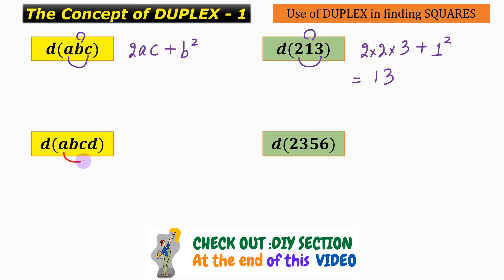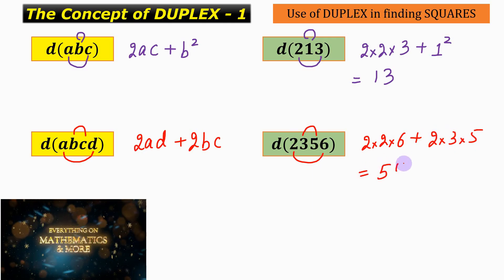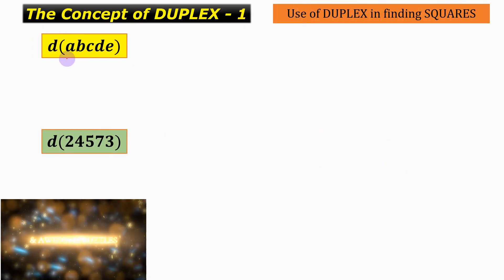For the duplex of a four-digit number abcd, we multiply the two extremes: 2 into a into d, plus the duplex of b and c, that is 2 into b into c. Similarly, the duplex of the number 2 3 5 6 will be defined as 2 into 2 into 6, plus 2 into 3 into 5, and this comes out to be equals to 54.